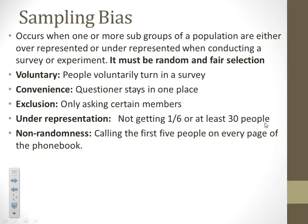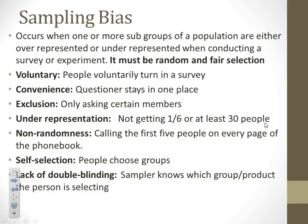Not being random: for example, calling the first five people on every page of the phone book — what about all the other 200 people on that page? They don't have a shot. Self-selection is when people choose their own groups. These are all examples of sampling bias.